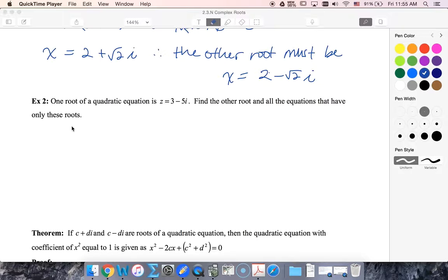So as we saw in example one, if I have one complex root, then I must have its conjugate as the other. So x equals 3 minus 5i would be one root, and x equals 3 plus 5i would be the other.